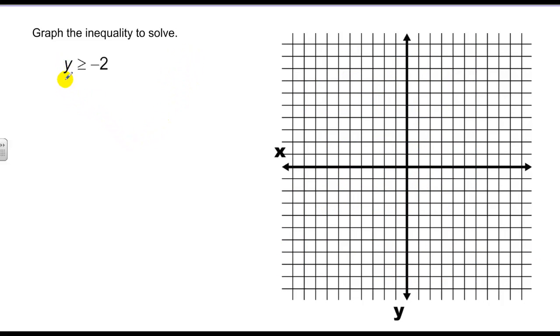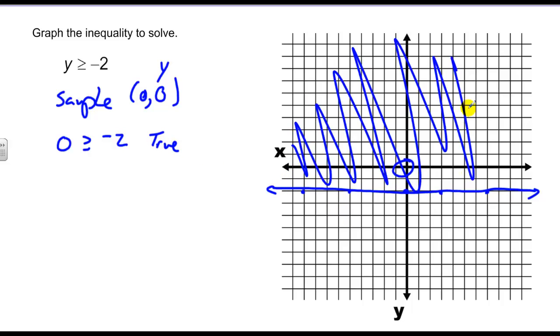Next, we're asked, where is y greater than or equal to negative two? Well, y is equal to negative two right here. It's also equal to negative two here, and here, pretty much everywhere on this horizontal line. And since it's equal, I make it a solid line. I've split this into two regions now. And I want to find out if my sample, I like using zero, zero, is going to work. So I say is zero greater than or equal to negative two. That's true. So zero, zero, my sample point is in my solution region. Therefore, I shade this region.